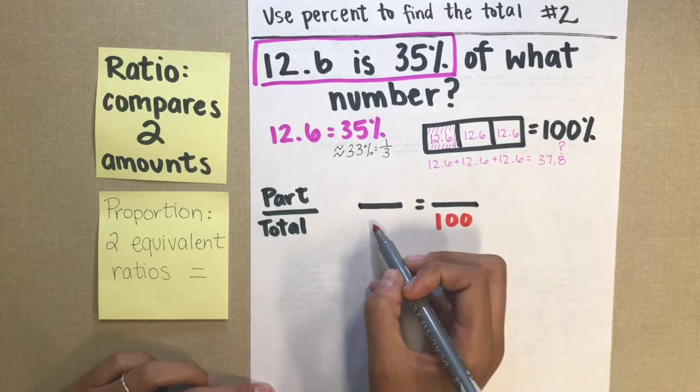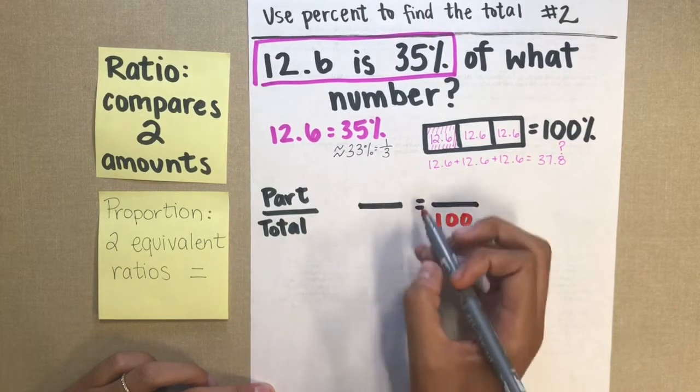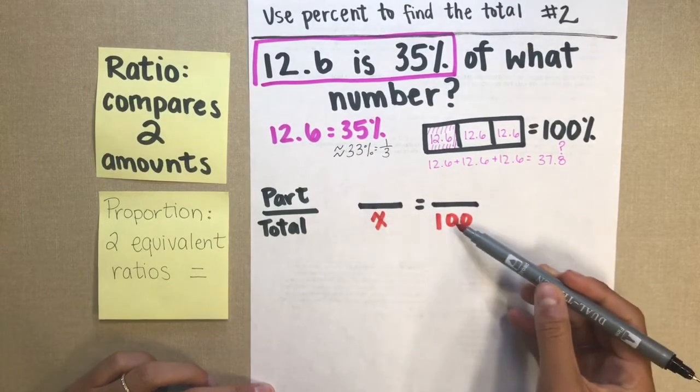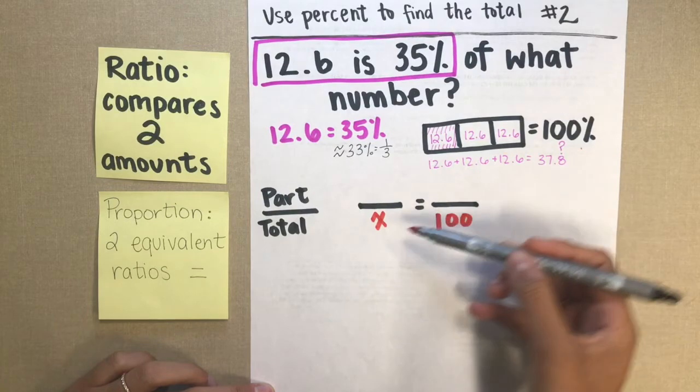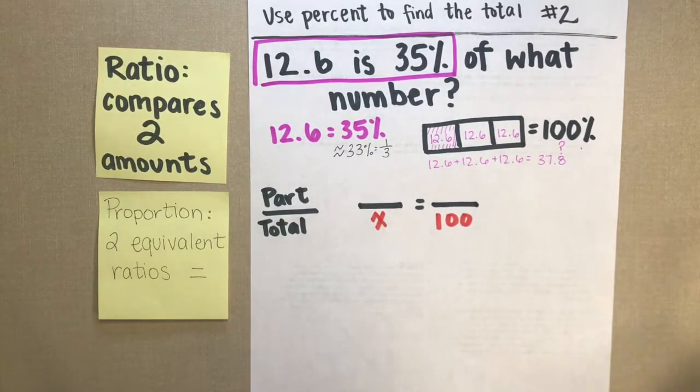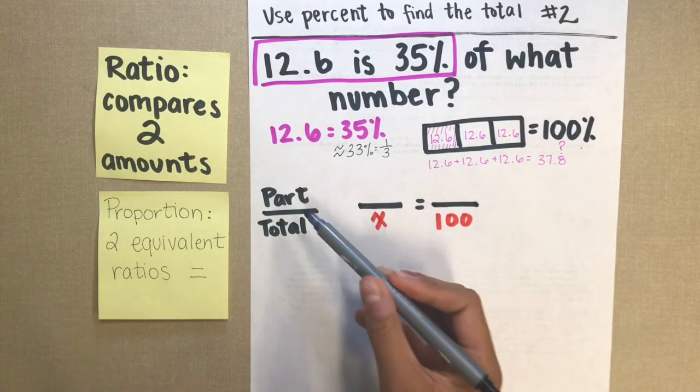And that means that the other number that I don't know, this total amount, is going to be equal to 100. So the missing number, I assigned it a variable. I called it x. Just a number that I don't know is equal to 100. And now let's fill in our parts.